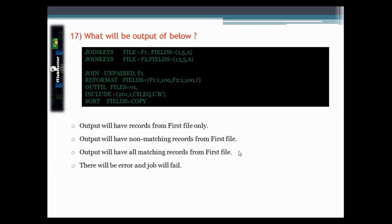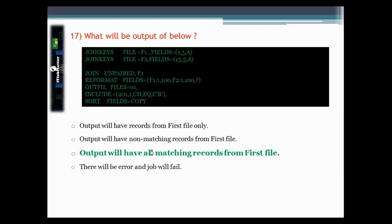This question asks what will be the output of the given piece of JCL code. After testing it, the answer is: we will get output of all matching records from the first file.